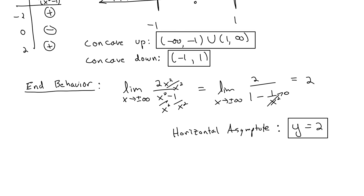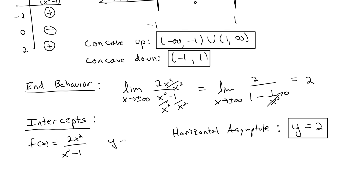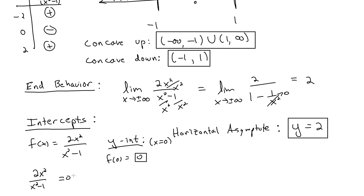Finally we'll examine the function's intercepts. For the y-intercept, we set x equals 0 in f of x equals 2x squared over x squared minus 1, giving f of 0 equals 0. So the y-intercept is 0. For the x-intercept, we set the whole function equal to 0, giving 2x squared equals 0, so x equals 0. Both intercepts occur at the origin (0, 0).